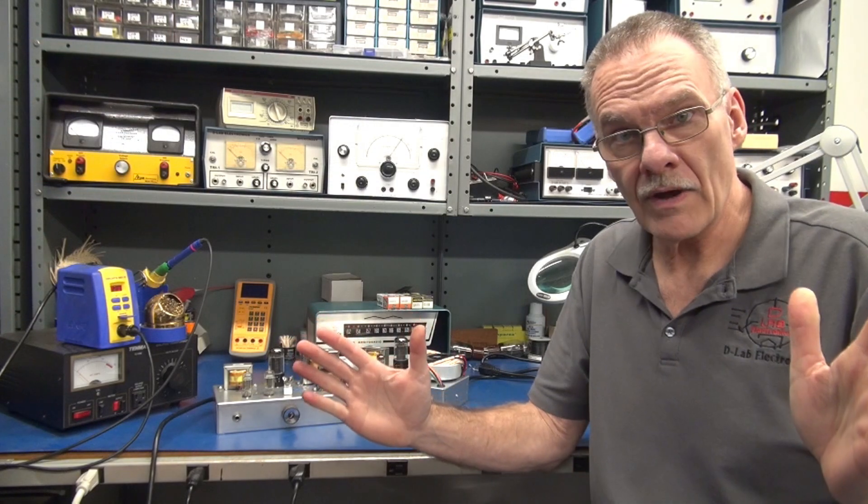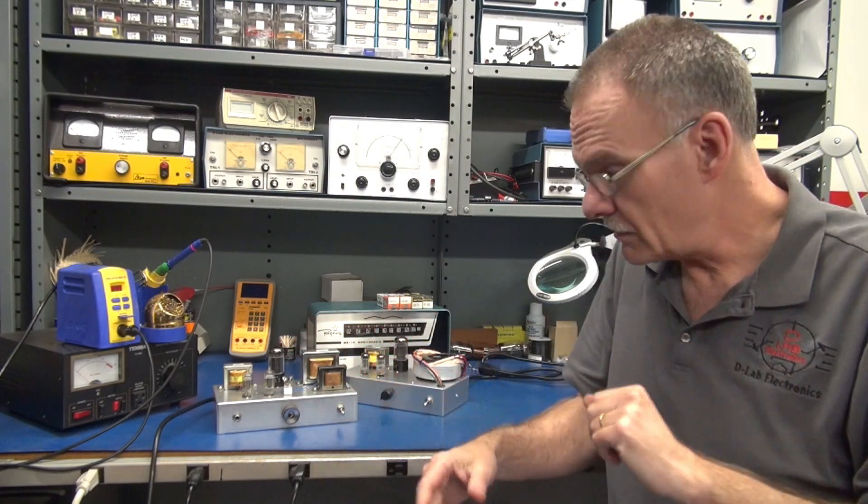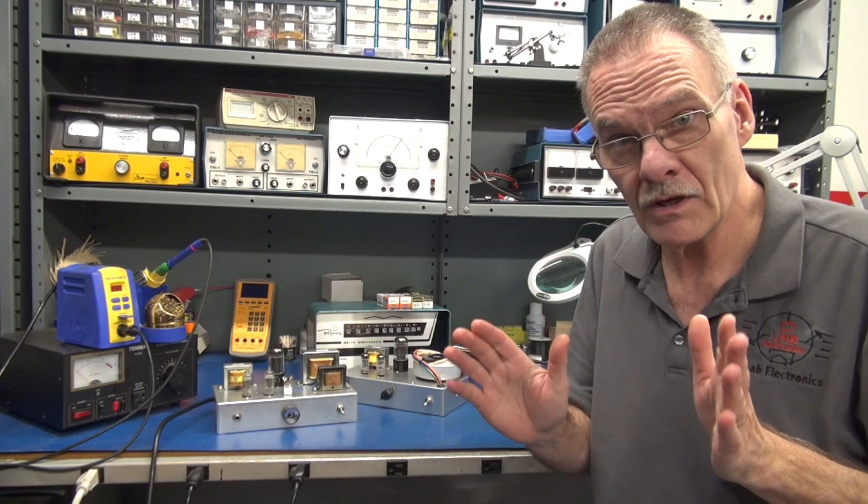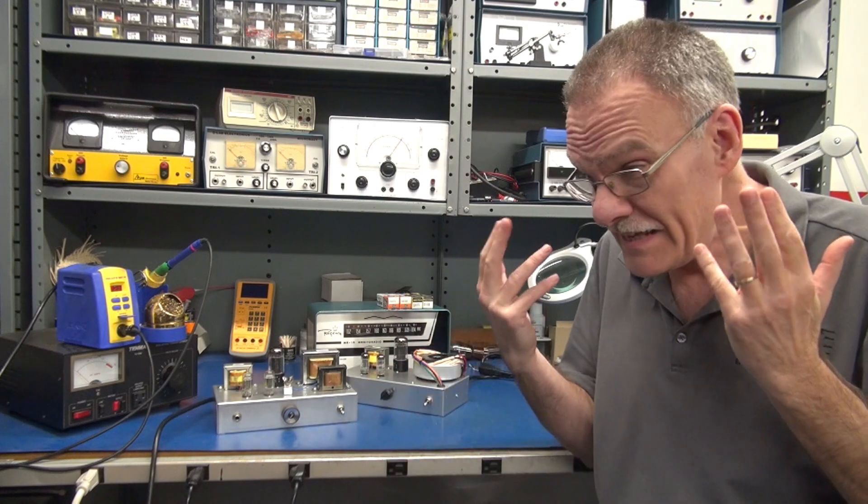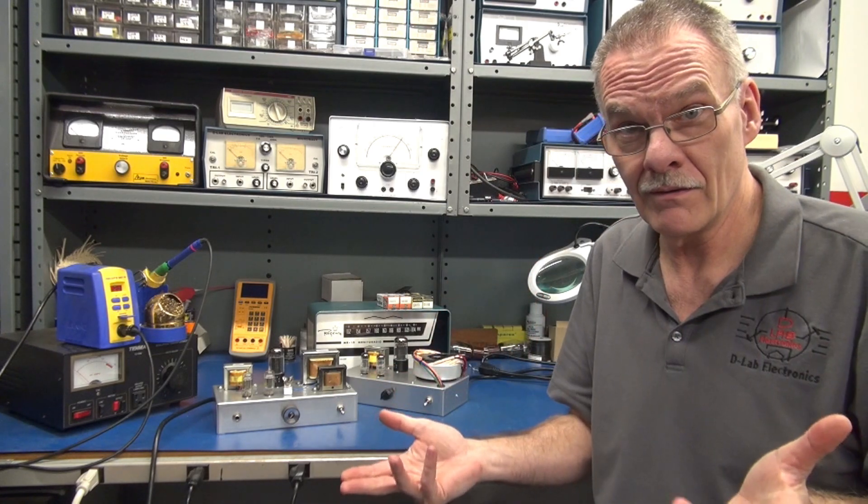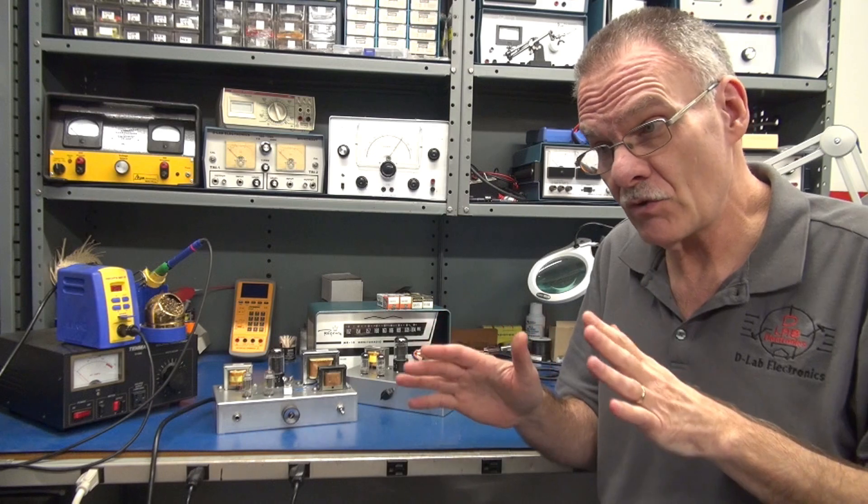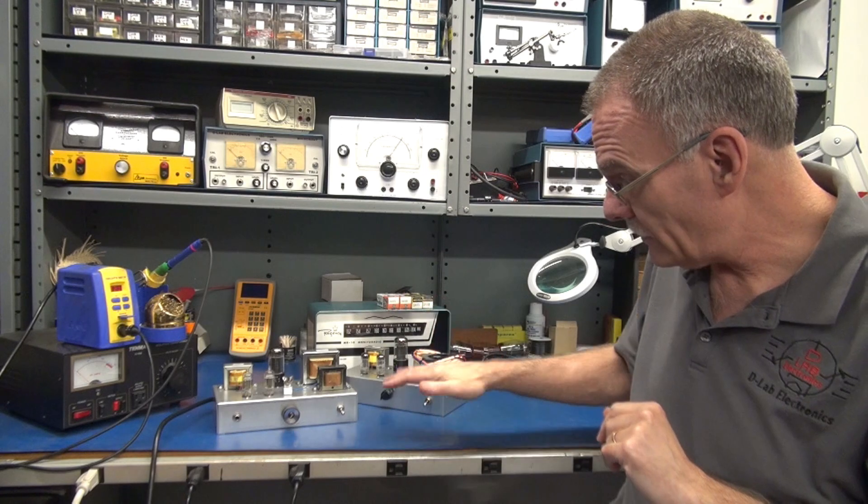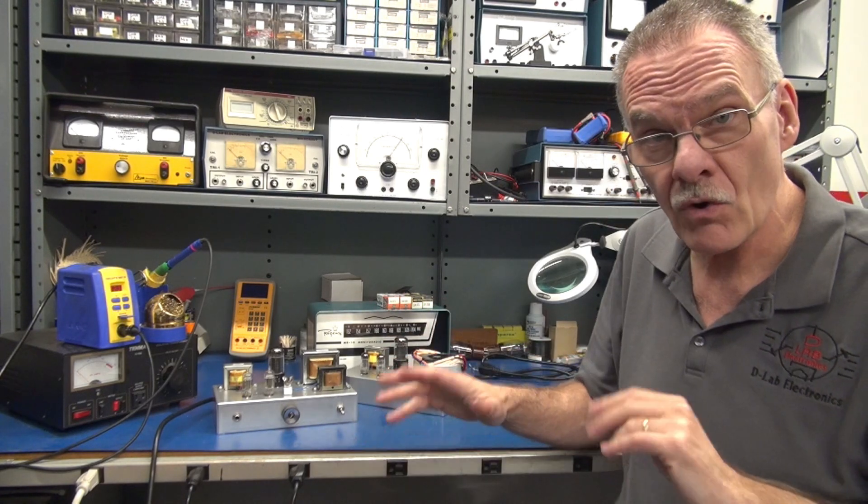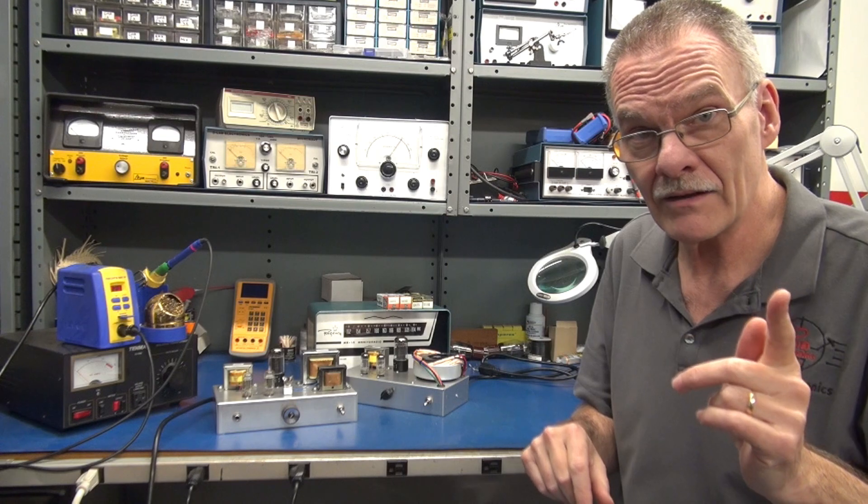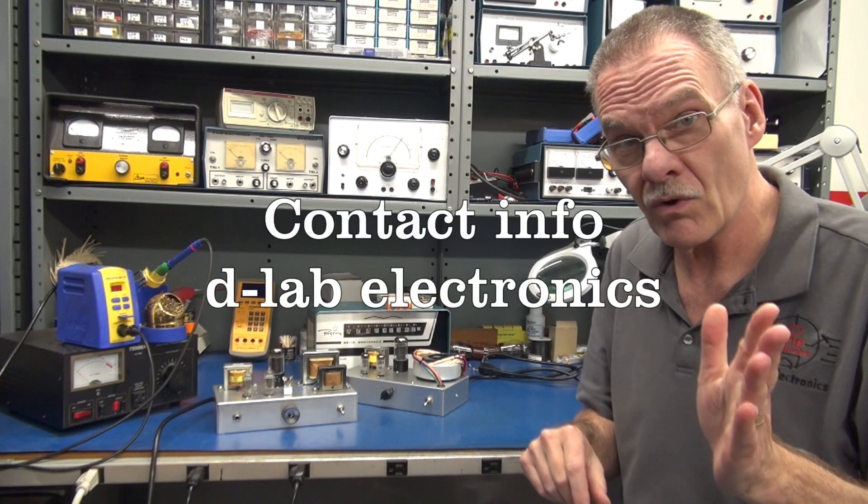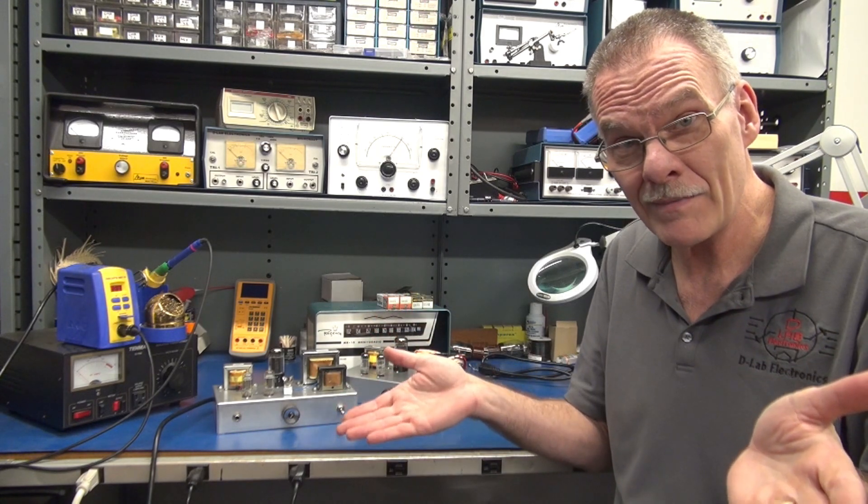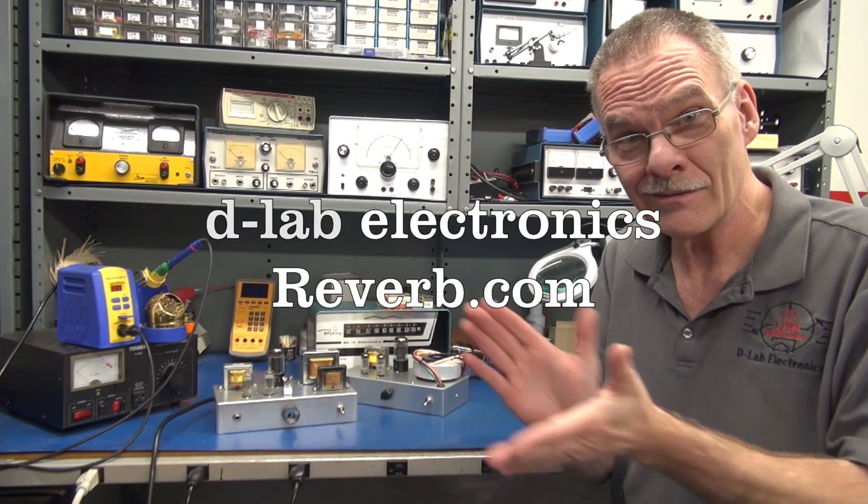Well, there you go guys. Now you have all the information you need to buy these inexpensive transformers and build a cool Class A amplifier. And as you can see, these things work wonderful. Next I'll be searching out inexpensive output transformers. But in the meantime, if you want the information of how to build these or actually buy them, you can contact me at D-Lab Electronics or reference my Patreon account, or I have some of them on Reverb.com for sale right now.